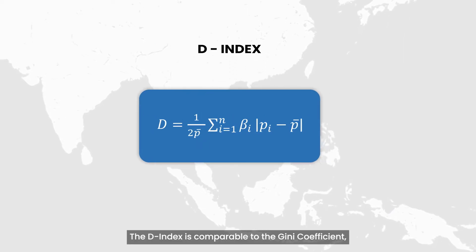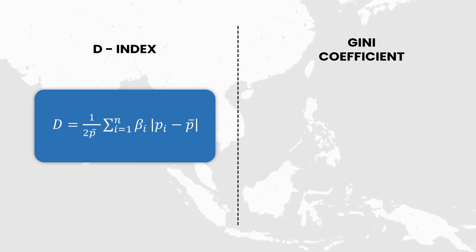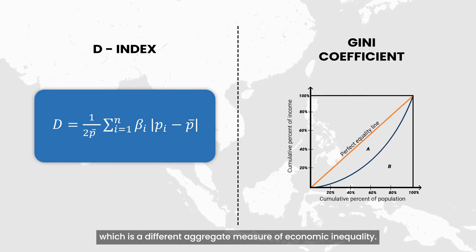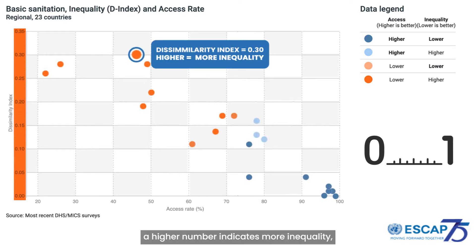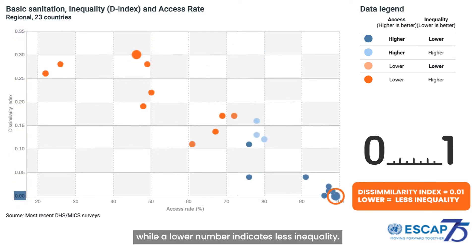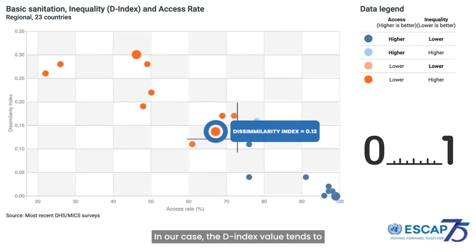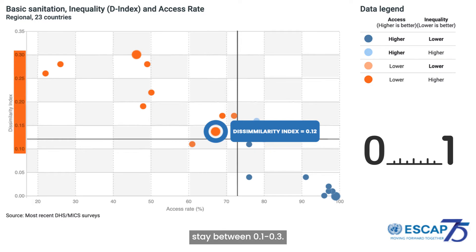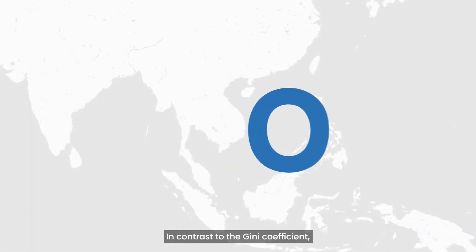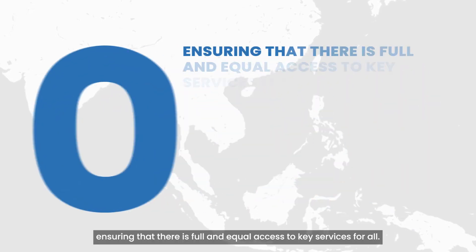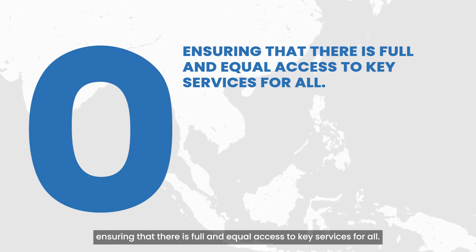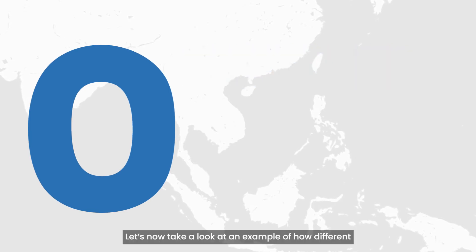The D-Index is comparable to the Gini coefficient, which is a different aggregate measure of economic inequality. The D-Index value also ranges from 0 to 1. A higher number indicates more inequality, while a lower number indicates less inequality. In our case, the D-Index value tends to stay between 0.1 and 0.3. In contrast to the Gini coefficient, the D-Index should be zero, ensuring that there is full and equal access to key services for all.